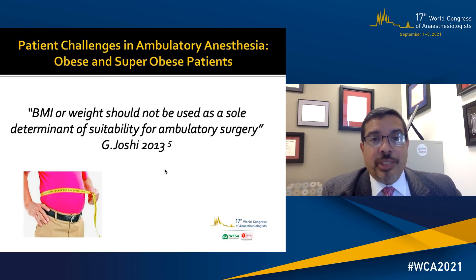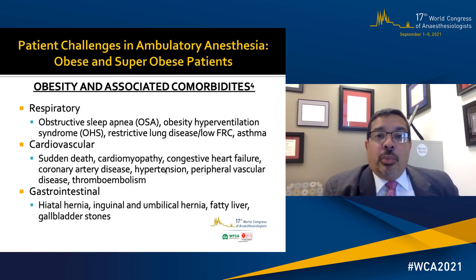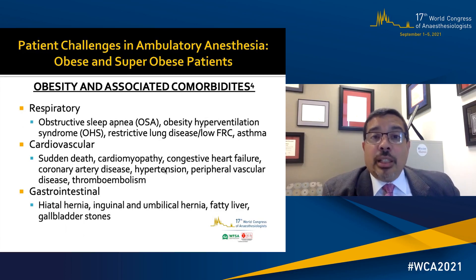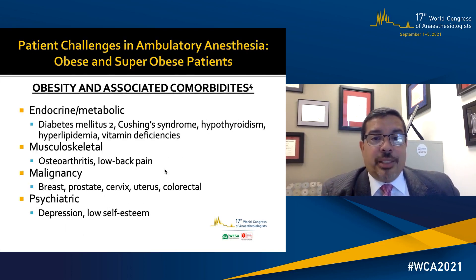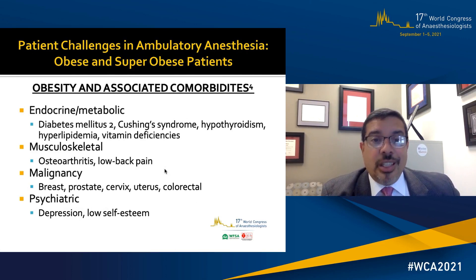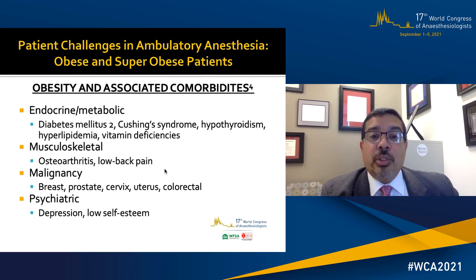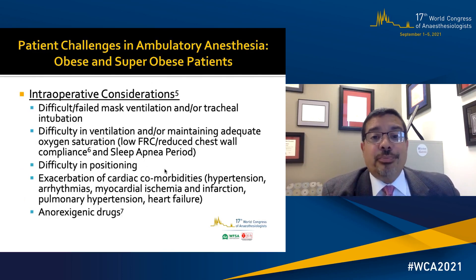We need to take a look at the whole package. With respect to some of the comorbidities associated with the obese and super obese, they basically affect just about every system of the body — from respiratory to cardiovascular to gastrointestinal, sudden death, OSA, asthma, gallbladder disease, endocrine conditions such as diabetes, vitamin deficiencies, the musculoskeletal system, malignancies such as breast, prostate, cervix, and others, as well as psychiatric conditions such as depression.